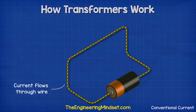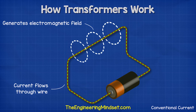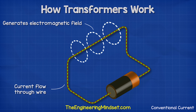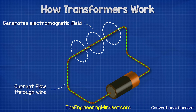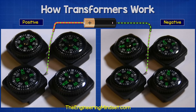When we pass an electrical current through a wire, it generates a magnetic field around the wire. If we reverse the direction of current, the magnetic field also reverses. We can see that by placing some compasses around the wire.